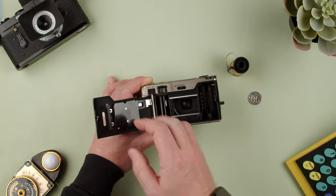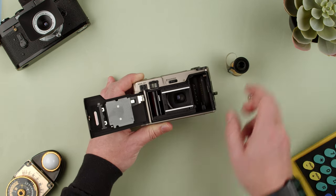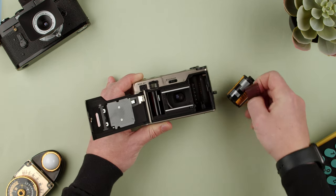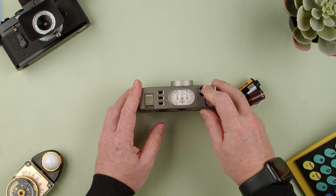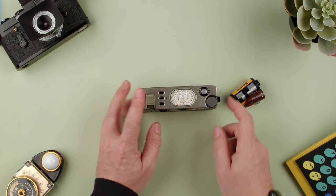It does read the DX code, so it will work with the DX code on your film. That's all you really need to know about this camera. Turn it off, and you do want to keep the flap down.